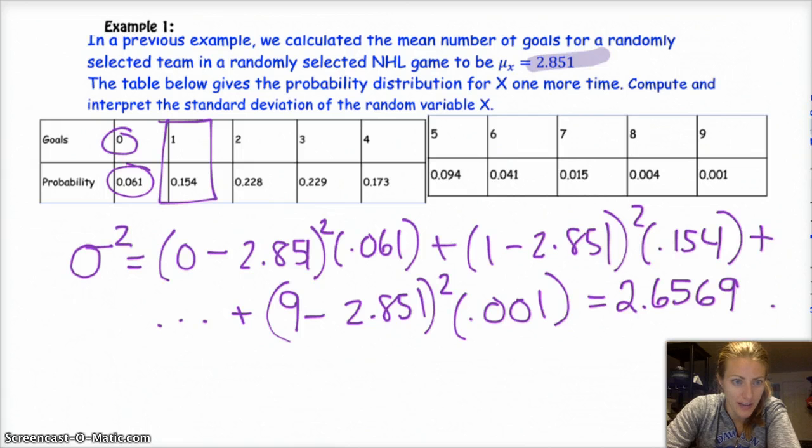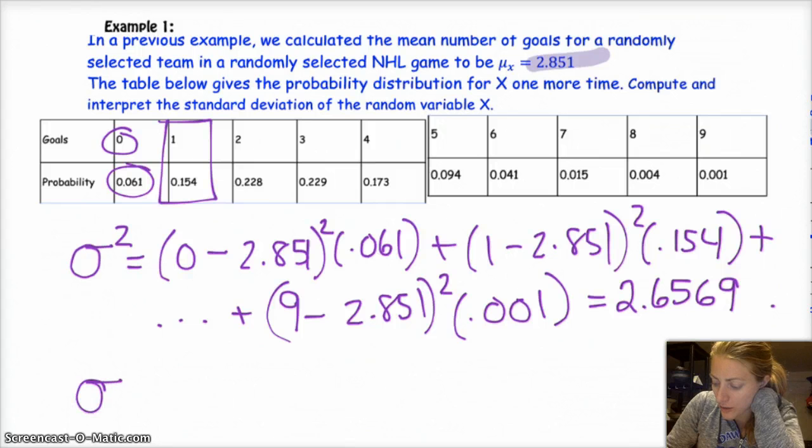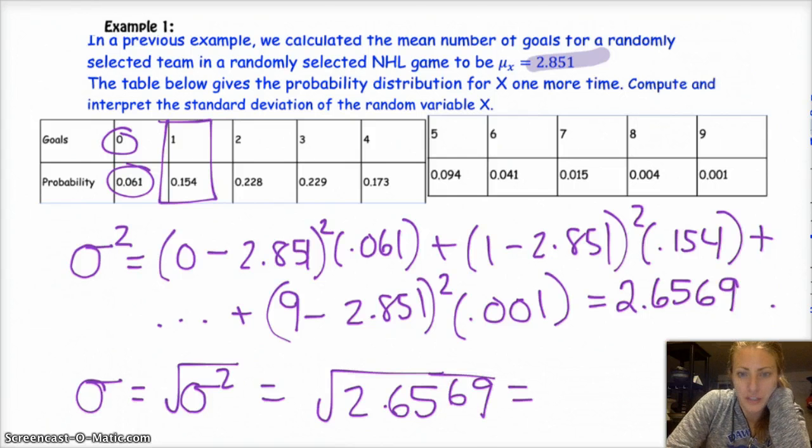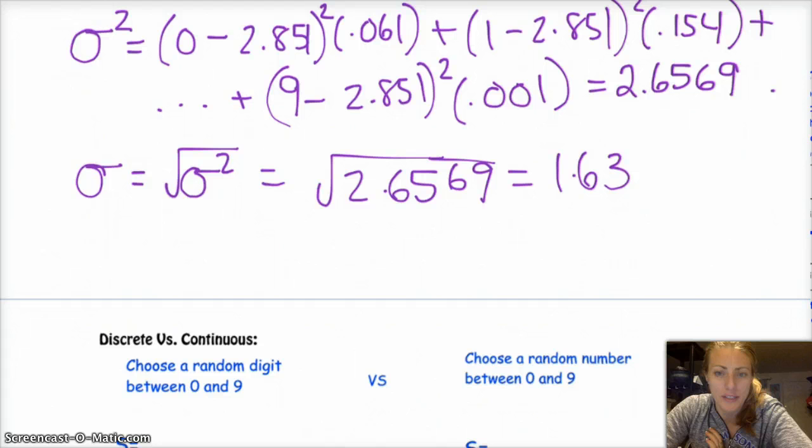So when you calculate all of that and add them all up, you get 2.6569. And then it asks for you to compute the standard deviation and interpret it. So to get the standard deviation, we just do sigma is the square root of the variance, which is the square root of 2.6569, which is 1.63 approximately.